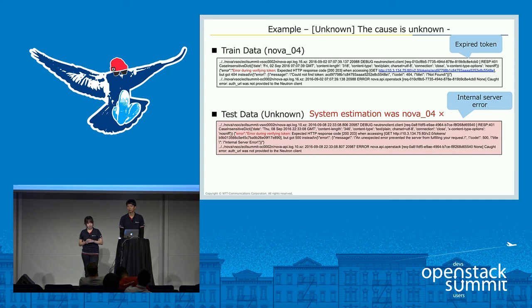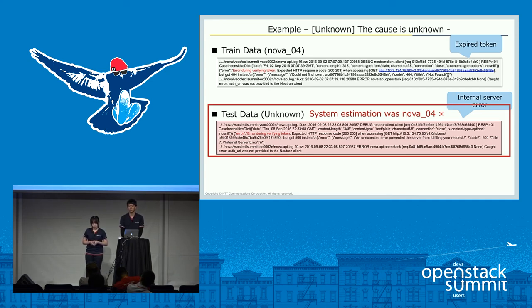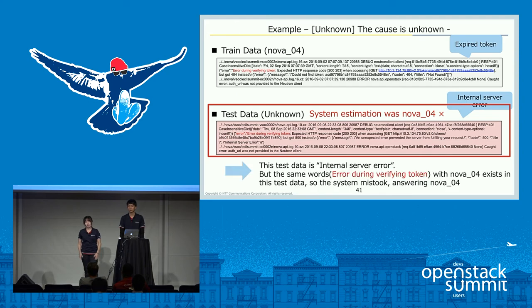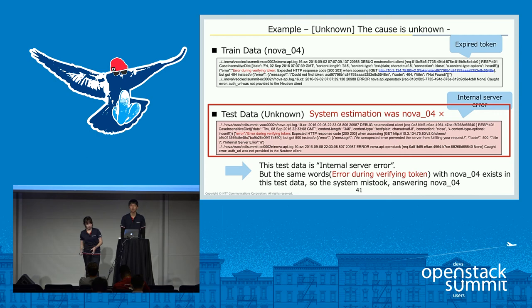In another case, the test data was an internal server error, but the system output was Nova 04 (expired token), because the OAuth URL phrase also exists in that test data. To solve this problem, we can add a new label for internal server error. By adding this new level, we think the system will estimate correctly.